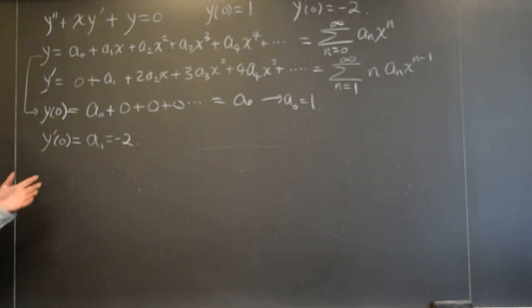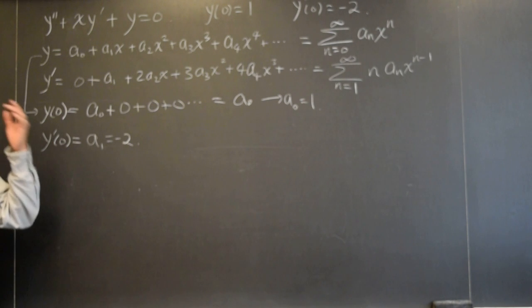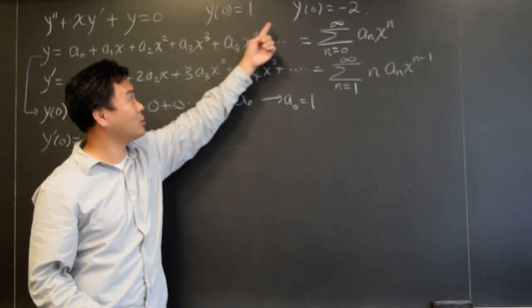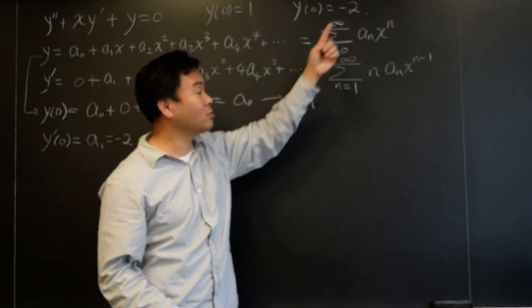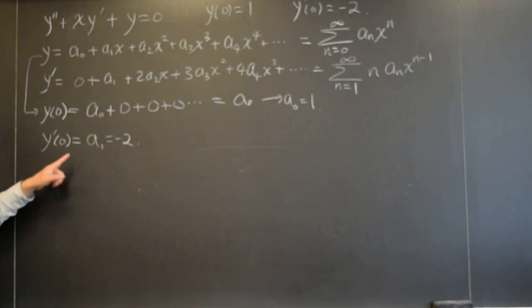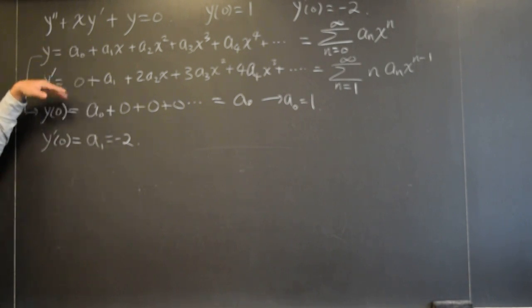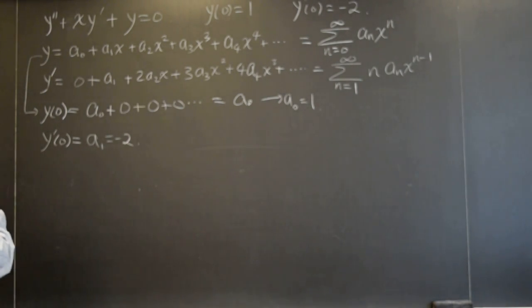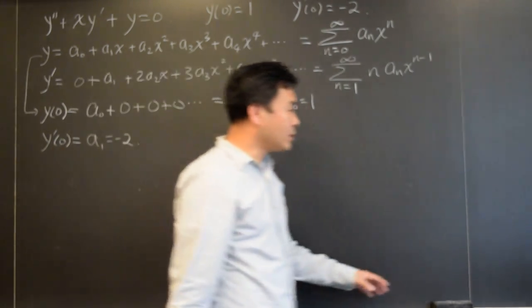Okay, so we had, for those of you who just came in, we just figured out that if you have y zero as one and y prime of zero as negative two, that would mean that a zero should be one and a one will be negative two just by writing out the y's and plugging in zero. So that's something to think about. If these are not given, then a zero, a one are arbitrary, and those will be the free parameters. That's what we talked about so far. Okay, let's, yes?